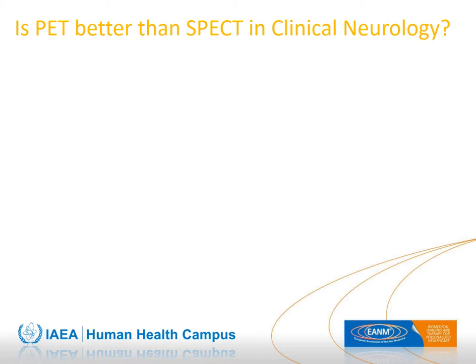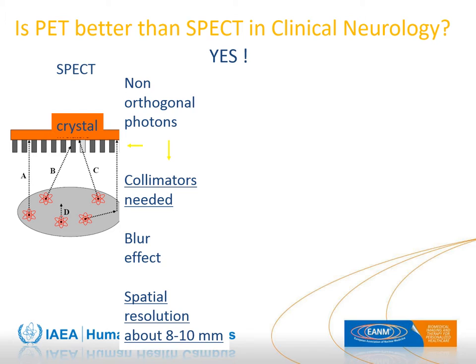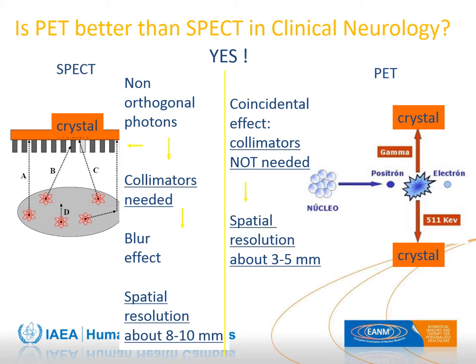Both PET and SPECT can be used for these purposes, but is PET technically better than SPECT in clinical neurology? The answer is yes. The collimator in a gamma camera is made of lead or tungsten and rejects many photons, resulting in SPECT sensitivity being several orders of magnitude lower than PET. Furthermore, the spatial resolution of SPECT is about 8–10 mm, while PET achieves about 3–5 mm, making PET superior in clinical neurology.